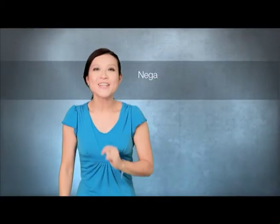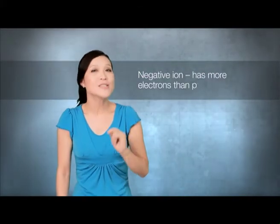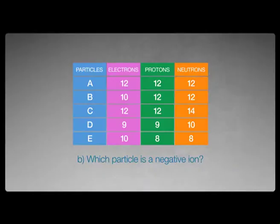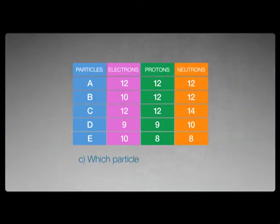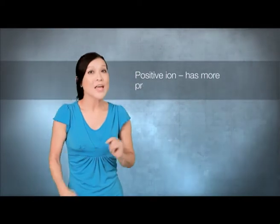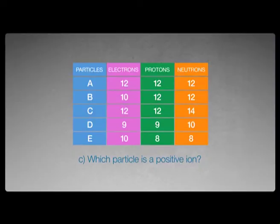A particle is a negative ion when it has got more electrons than protons — it is negatively charged. This is particle E. Question C: which particle is a positive ion? The reverse must be true for a positive ion — it must have more protons than electrons. So the answer is particle B.